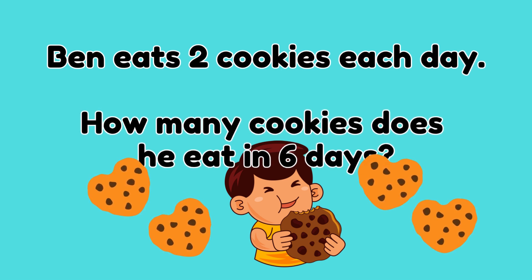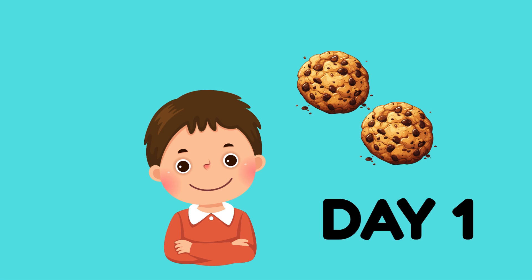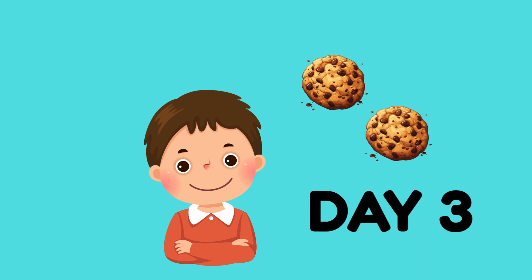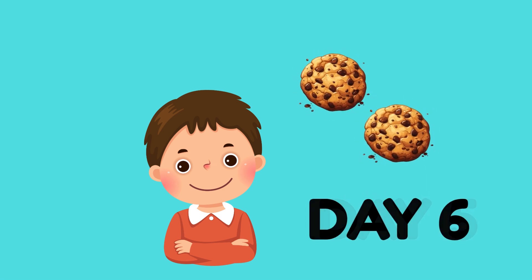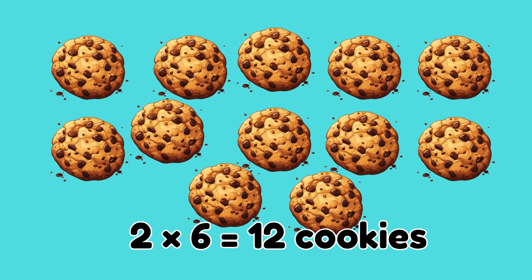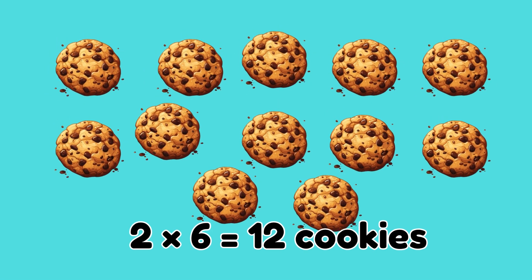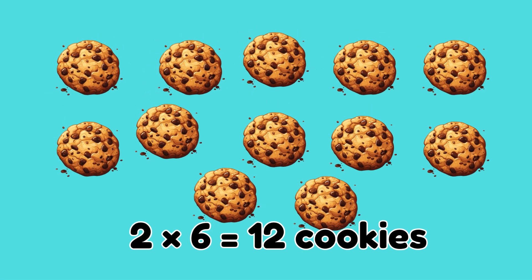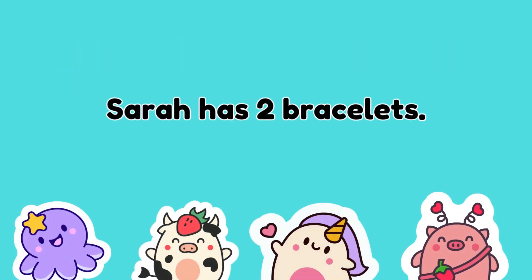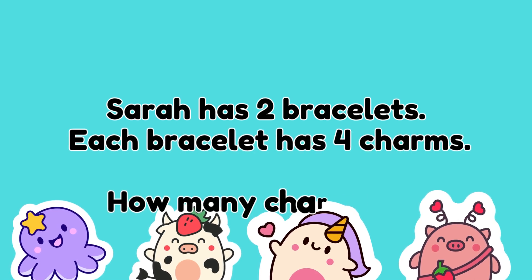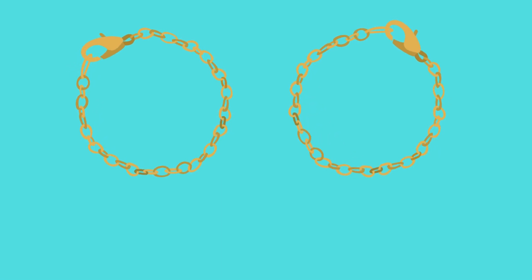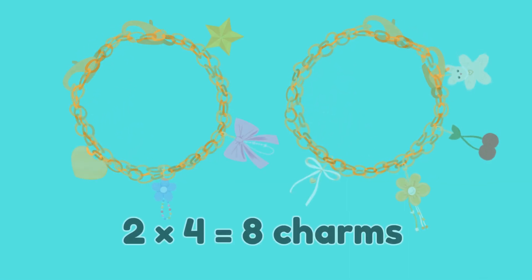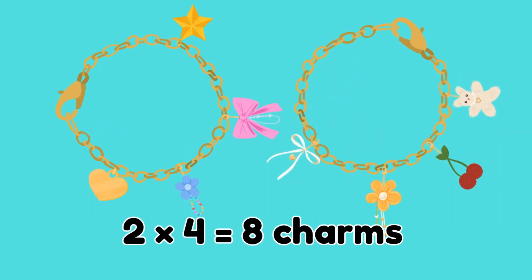Ben eats two cookies each day. How many cookies does he eat in six days? Two times six is equal to twelve — Ben ate twelve cookies! Sarah has two bracelets. Each bracelet has four charms. How many charms are there? Two times four is equal to eight — that is eight charms in total!